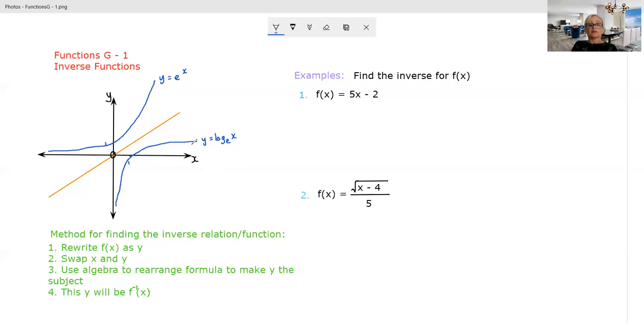I also want to point out at this point that sometimes you might start with a function and when you do the inverse it might not be a function. If you start with a parabola, for example, that's not a very nice looking parabola, but that is a function, right? The vertical line test works.